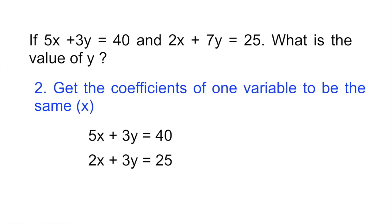Step two would be to get one of the coefficients to be the same. In this case because they're asking us for y, what we're going to do is we're going to get the variable of x in both equations to be the same. So how do we get 5x and 2x to be the same? Well in the first case we would multiply everything by 2 and in the second equation we would multiply everything by 5.